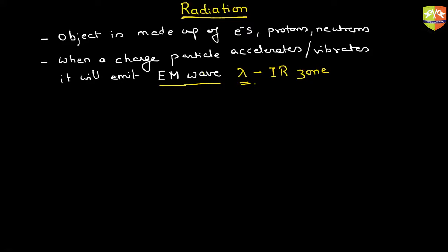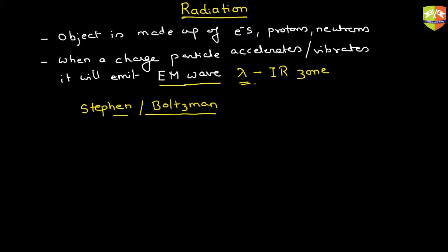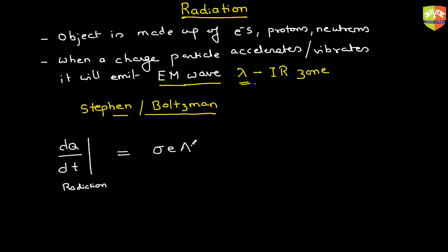This kind of heat transfer was extensively studied by Stefan and Boltzmann — two scientists. They came up with an expression for heat transfer in the case of radiation. So if radiation is happening, the amount of radiation — please write down — will be equal to σεAT⁴, where sigma (σ) is Stefan's constant.